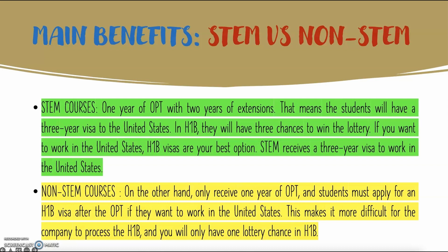First of all, with STEM courses, after you complete your bachelor's or master's degree, you will get a one-year OPT period. That means one year of Optional Practical Training, during which you can work full-time at a company. After that, you are eligible to extend for another two years.